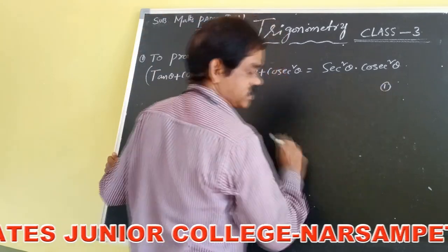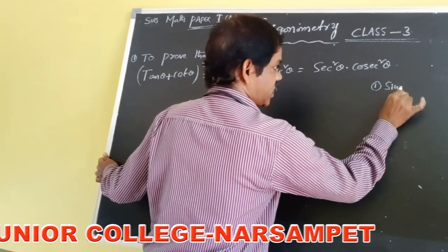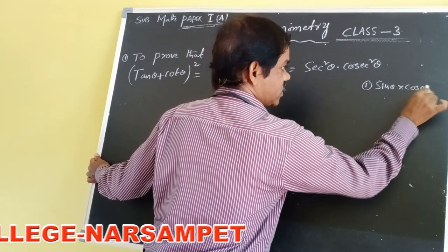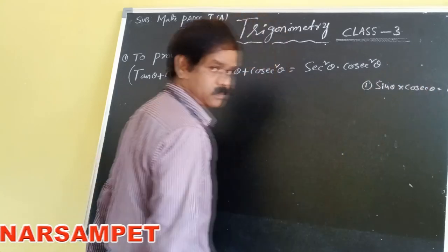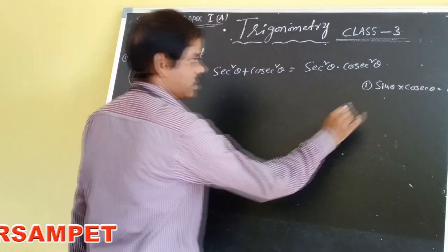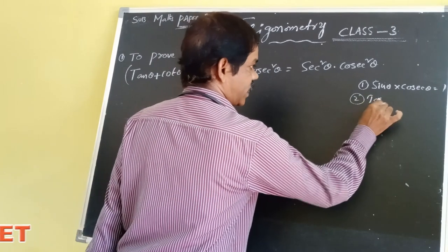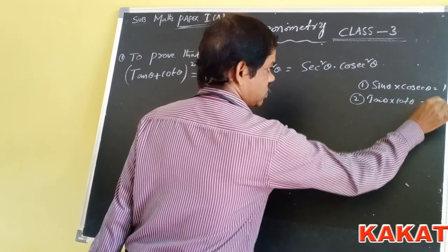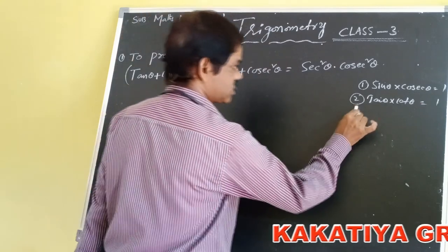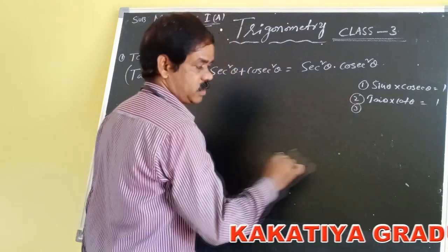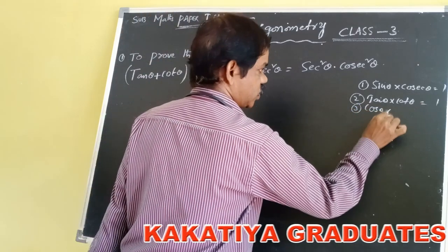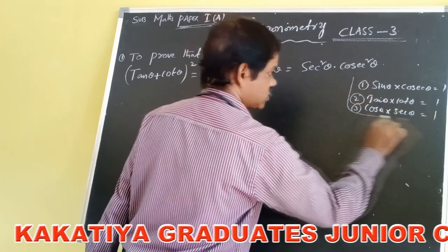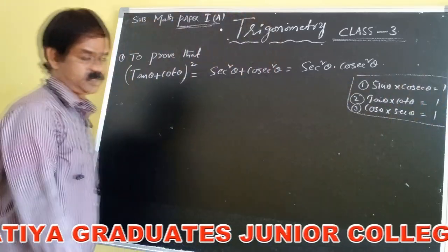The first reciprocal is: sin theta into cot theta is equals to 1. Okay, next reciprocal: tan theta into cot theta is equals to 1. And the third reciprocal: cos theta into sec theta is equals to 1. So these are the basic concepts.